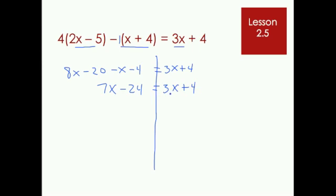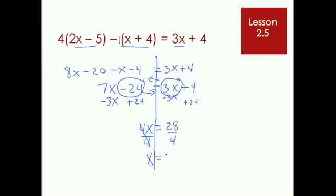Now we get to the steps that we've been talking about already. Variables to the left, take this 3x, take it over there by subtracting it, and 7x minus 3x will give us 4x. We'll take this negative 24, we'll take it to the other side by adding it, giving us 28. So now we have 4x equals 28, one operation, multiplication. We simplify that by undoing the multiplication by dividing, and that will cancel, leaving us x equals 7.